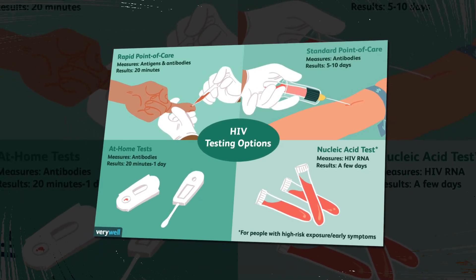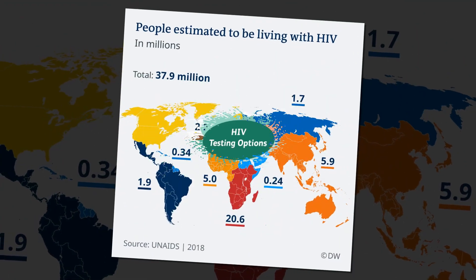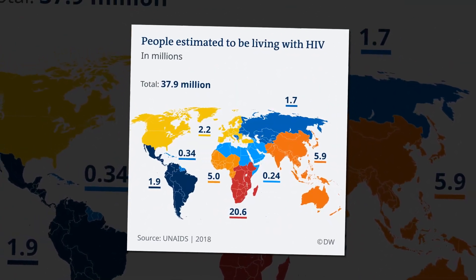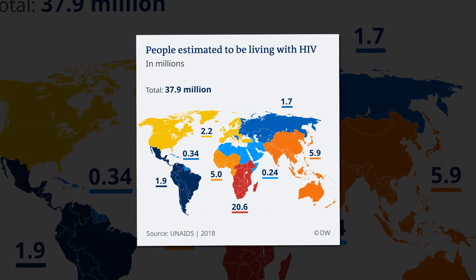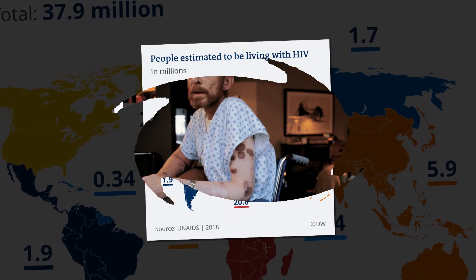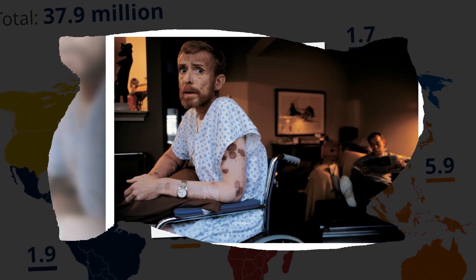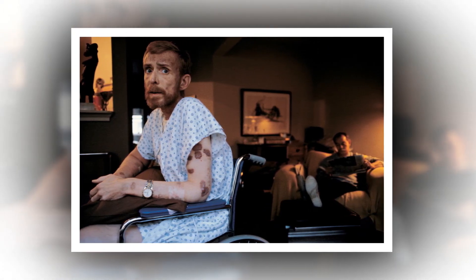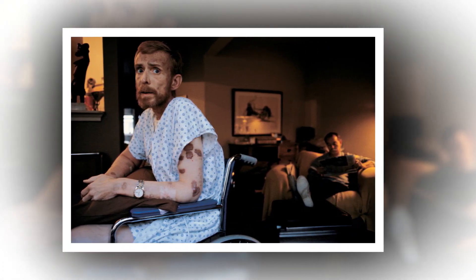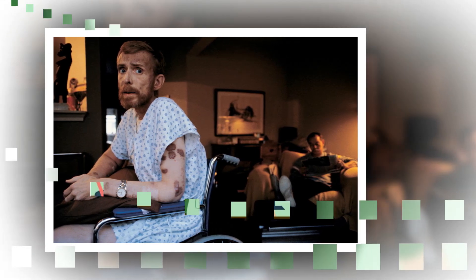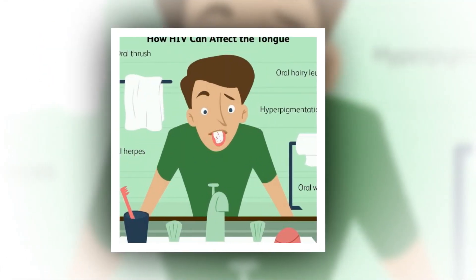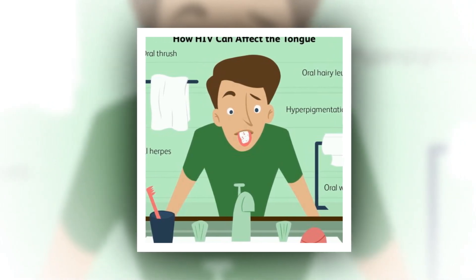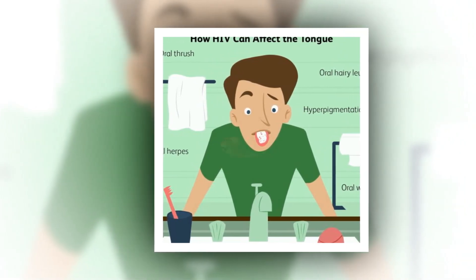Oral candidiasis: Worldwide, oral candidiasis — also called thrush — is the most commonly occurring oral health condition in people with HIV. One of the most important risk factors of this fungal infection is a low CD4 T-cell count, below 200 cells/mm³, which is usually indicative of a person whose HIV is undiagnosed or not being effectively treated, leading to a weakened immune system.